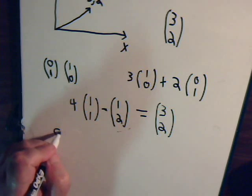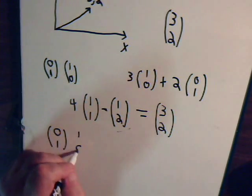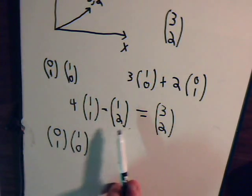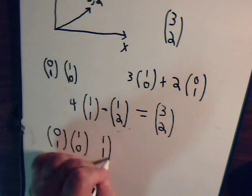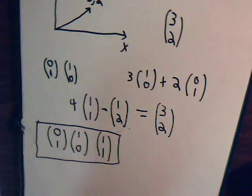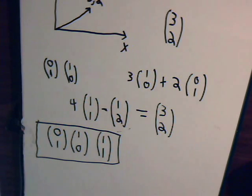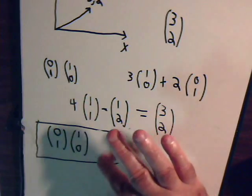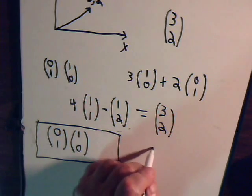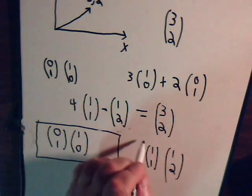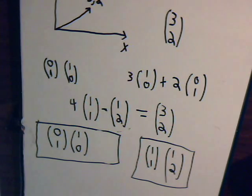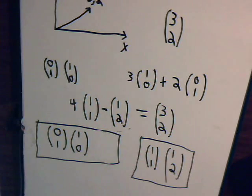We said these two are linearly independent, and these two are linearly independent. But could I say that this group of three vectors is linearly independent? Well, no, because this vector can be written as a sum of the other two. So when you're in two-dimensional space, the maximum number of linearly independent vectors you can have in a group is two. The point is that if you're in two-dimensional space and looking for a group of linearly independent vectors, there can't be more than two of them per group.